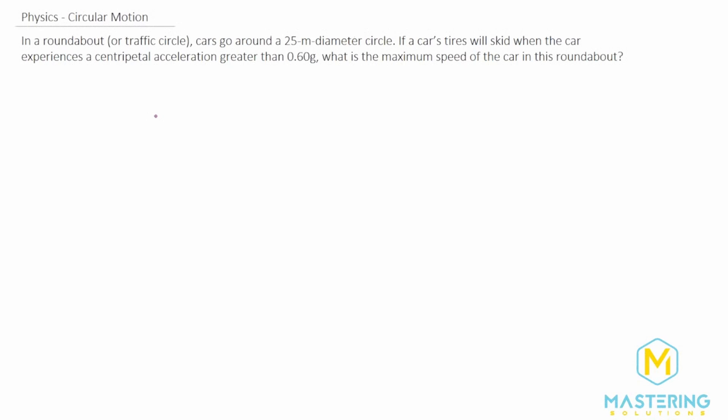Welcome to Mastering Solutions. We have another circular motion problem. They tell us at a roundabout, cars go in a 25-meter diameter circle. If a car goes more than the centripetal acceleration of 0.6 g's, the car's tires are going to start skidding. So we have to figure out what the maximum speed of the car is in the roundabout without skidding.